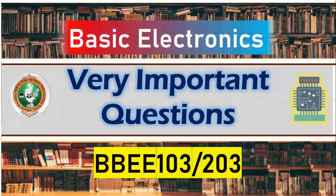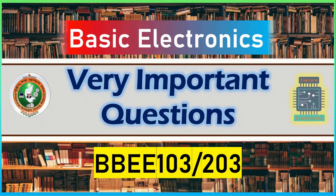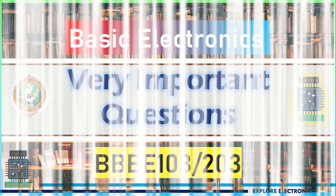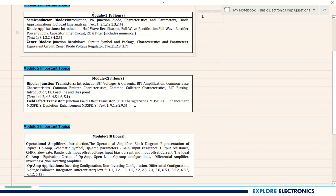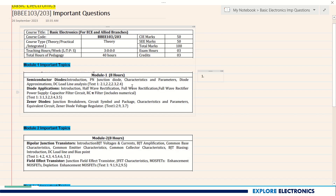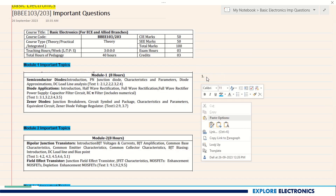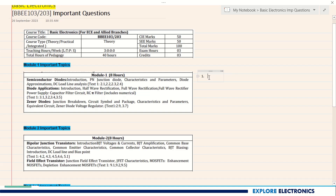Hello everyone, welcome back to Explore Electronics. In this video, let's see some very important questions in the Basic Electronics subject with the code BBEE103 or 203. Let's get into each module and see which are the important topics and questions you can get in the exam. This is the module-wise syllabus I have taken here.